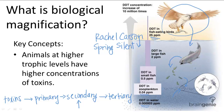This is a classic example of biological magnification and shows how a small mistake can quickly create a snowball effect in the ecosystem.